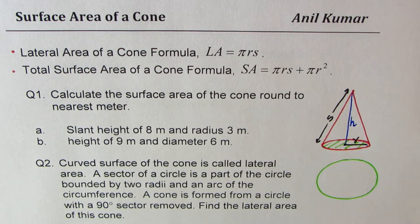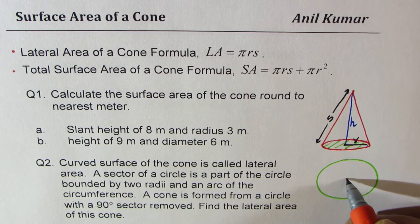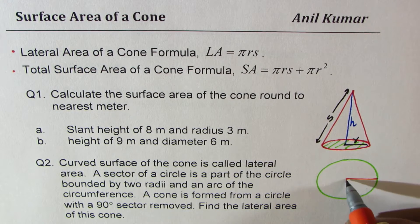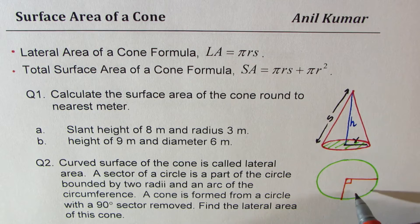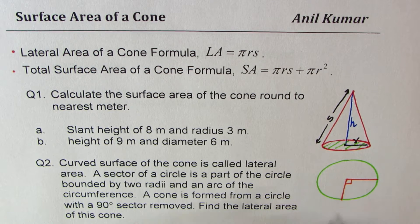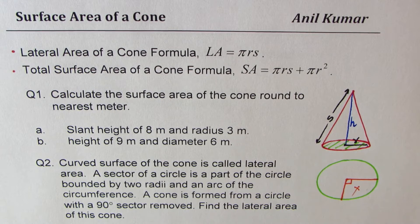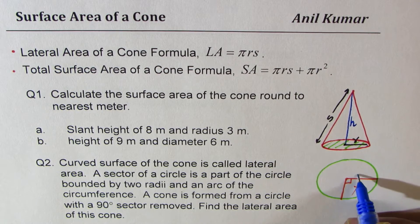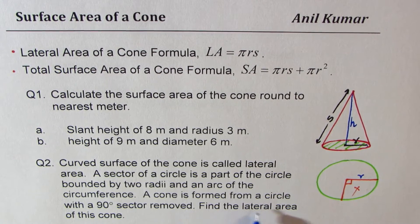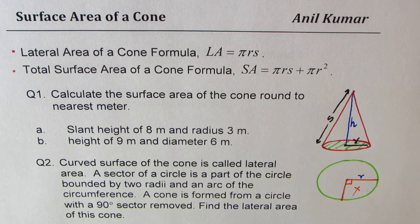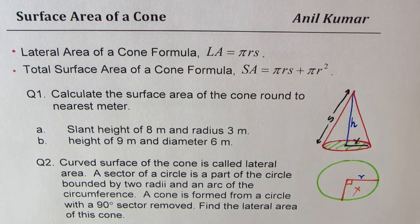To understand this question: we have a circle and we are removing a 90-degree sector — that much has been cut away. If you remove that portion and fold the remaining piece, it forms a cone. The original circle has radius r, and we need to find the lateral area of this cone.